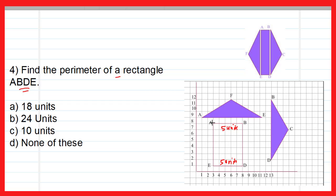Now finding distance AE: point A is at a distance of 8 units from the x-axis and point E is at a distance of 1 unit, so AE equals 8 minus 1, which is 7 units. The opposite side is also 7 units. The total perimeter is 5 + 5 + 7 + 7 = 24 units. Therefore option B is the correct option.